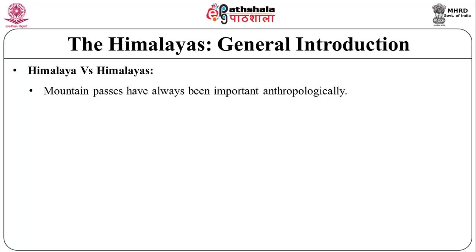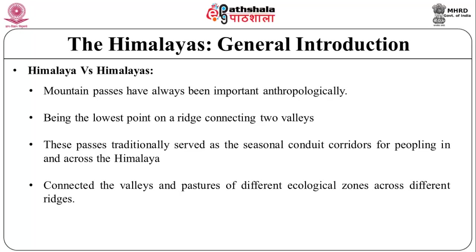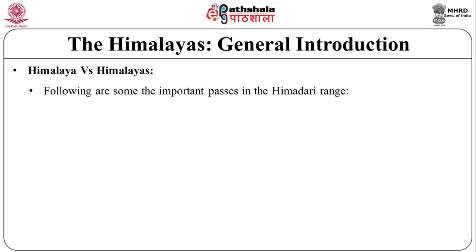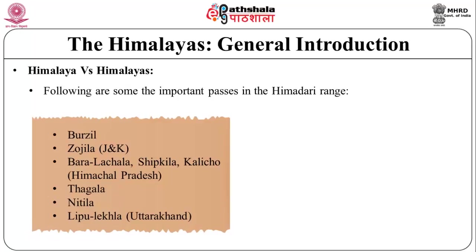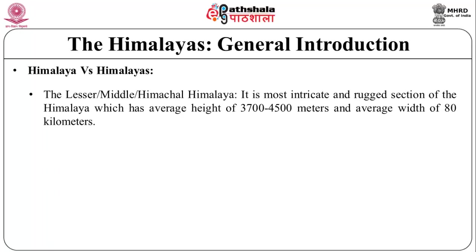Mountain passes have always been important anthropologically. Being the lowest point on a ridge connecting two valleys, these passes traditionally served as seasonal conduit corridors for peopling in and across the Himalayas, connecting valleys and pastures of different ecological zones across different ridges. Some important passes in the Himadri range include Zozila, Baralacha, Shipkila, Kalichho, Thagla, Nathu La, Jelep La, Kangra, Dokla, Sela, Bomdila, and Bomiya.